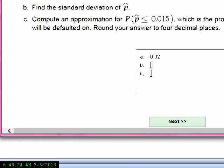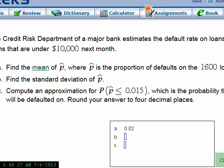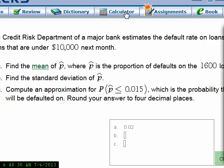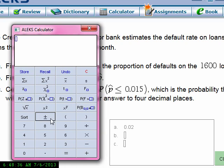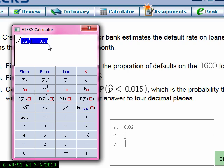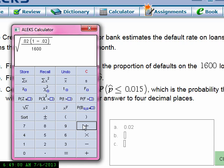Using the calculator, I'll compute that. It's the square root of p, which is 0.02, times (1 minus 0.02), or 0.98, divided by 1,600. When you do that computation, you get 0.0035.